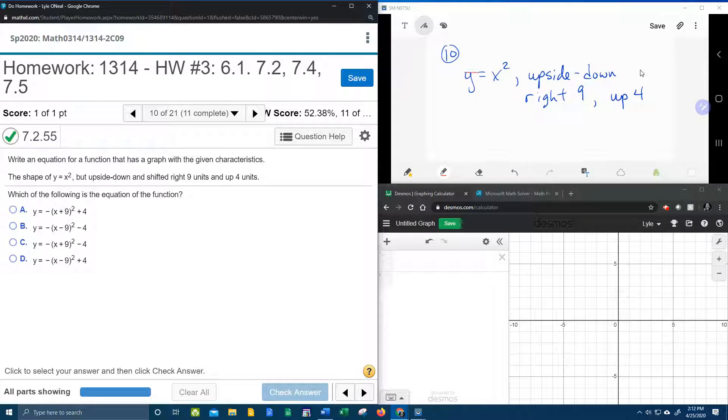So first of all, y equals x squared is the parent function. The right 9, right means horizontal. And remember, a horizontal shift can be either left or right.